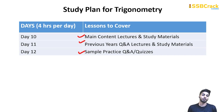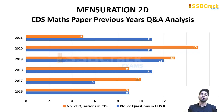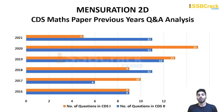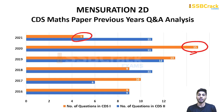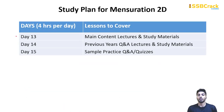Then you come to Mensuration 2D, where questions involve area and perimeter. The maximum number of questions asked is 15 and the minimum is 5. This is a scoring topic because you just have to learn the formulas — nothing more than that. Day 13 to Day 15 you are going to cover Mensuration 2D completely, devoting four hours per day.